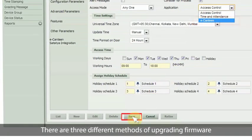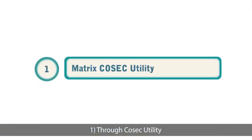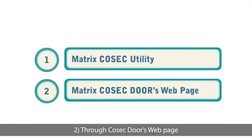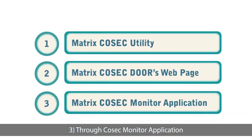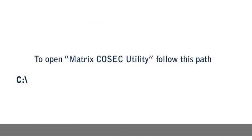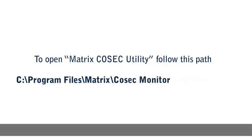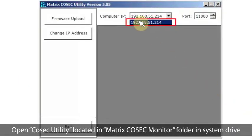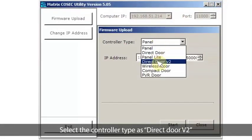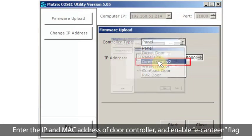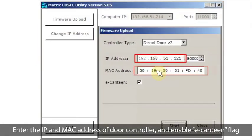There are three different methods of upgrading firmware: one, through Cosec Utility; two, through Cosec Door's web page; three, through Cosec Monitor application. Let's start with the first method. To open Cosec Utility, follow this path: C:\Program Files\Matrix\Cosec Monitor\CosecUtility.exe. Open Cosec Utility located in the Matrix Cosec Monitor folder in the system drive.